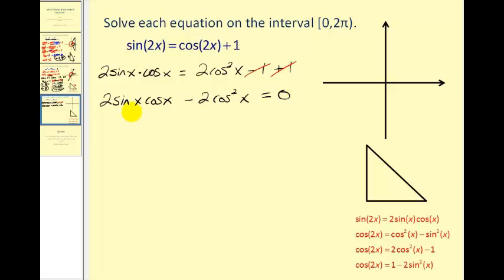Now this is factorable. There's a common factor of two cosine x. Let's try factoring that out. That's going to leave us with sine x minus cosine x equals zero.